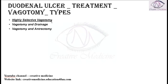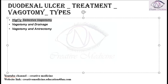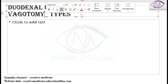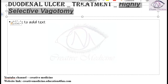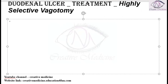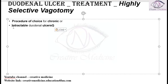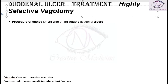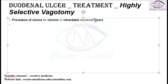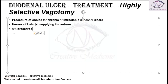Highly selective vagotomy is the procedure of choice for chronic and intractable duodenal ulcers. In highly selective vagotomy, the nerve of Latarjet, which supplies the antrum, is preserved.